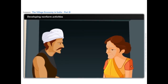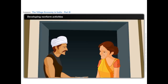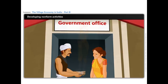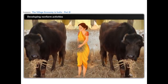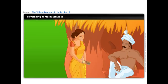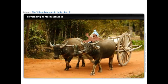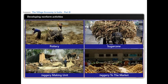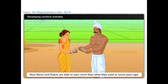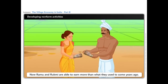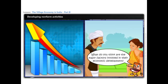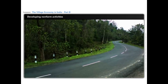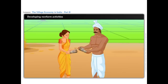Now, look at another situation. Recall the farm labourers Ramu and Rukmi. Suppose both get cheap loans under a government scheme. They purchase two buffaloes with the money and earn by selling the buffaloes' milk. With the little surplus amount they earn, Ramu made a wooden cart driven by the buffaloes. Now they use the cart to transport various items such as clay for potters, sugarcane for the jaggery making unit, and jaggery to the market in the small town nearby. Cheap loans and development of good roads and connection with urban areas helped in improving the economic condition of Ramu and Rukmi.